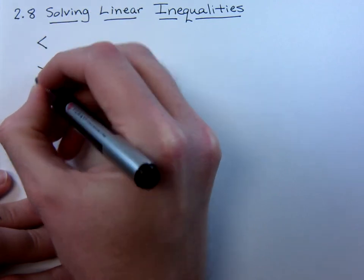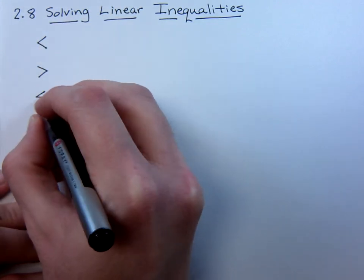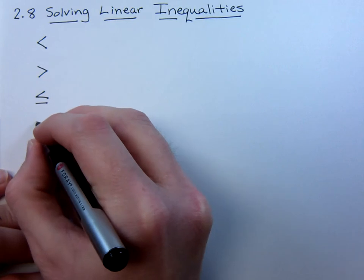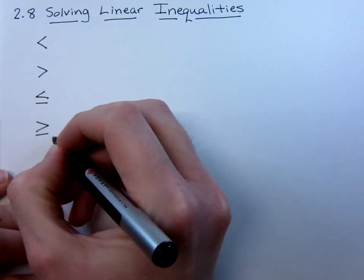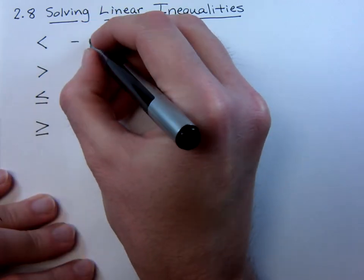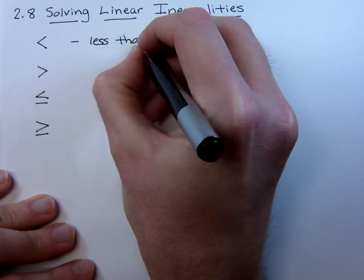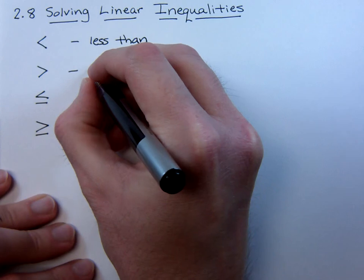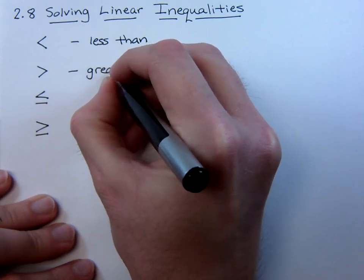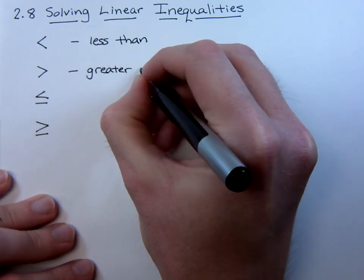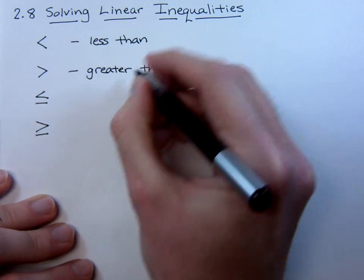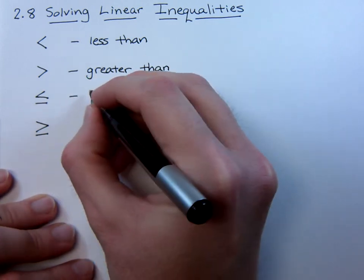Remember, these are the symbols that we see associated with inequalities. This first one just means less than. The next one is greater than. I'm sure that we've already seen these guys before. Just make sure that you look over them and that you are familiar with which way they're pointing and what their meaning is.